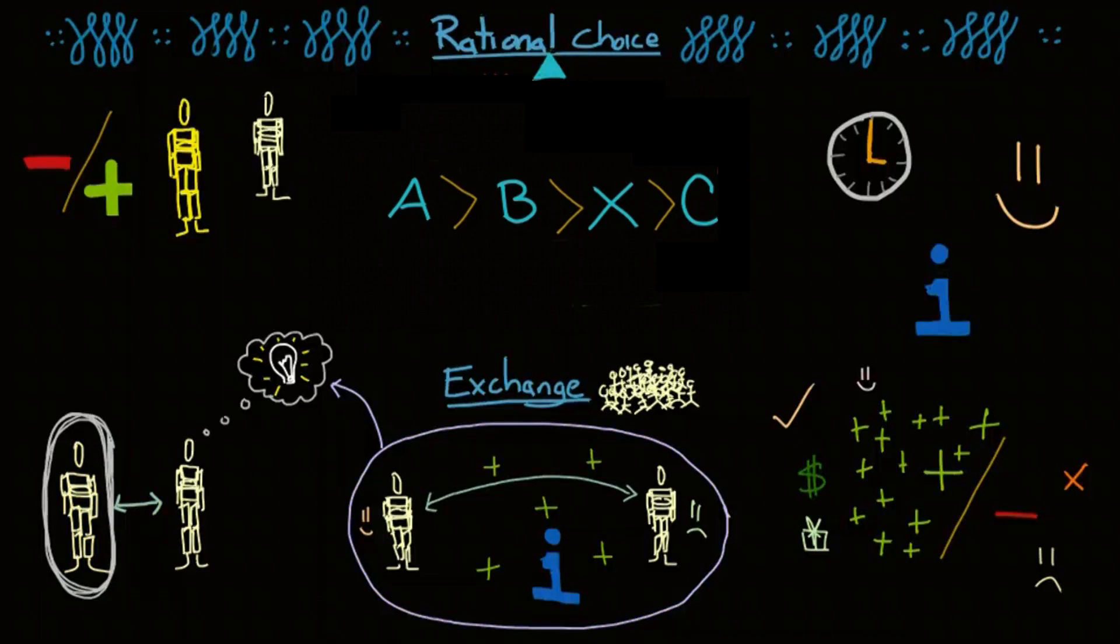Rational choice theory and exchange theory attempt to explain society through individuals and interactions. They assume people make rational choices based on evaluating the rewards and punishments of interactions, and that behavior is guided by self-interest and interdependence.